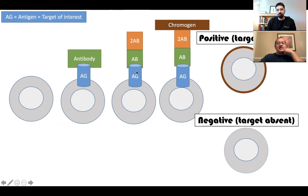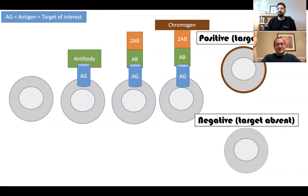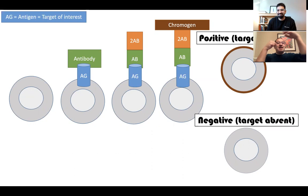The antibody attaches to the antigen of interest, and then you use a second antibody - the orange thing there, the secondary antibody - to attach to that antibody. How do you see it? Because you can't really see an antibody under a microscope. So you need a chromogen, something to make it get a color - that's the brown thing on top. The chromogen attaches to the secondary antibody. So it's a whole chain: cell, antigen, antibody, another antibody, and something that makes it brown. Kind of like Lego blocks.